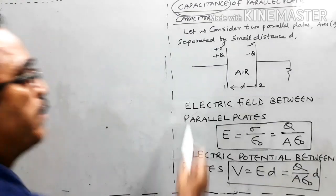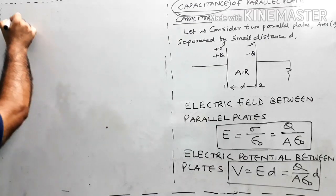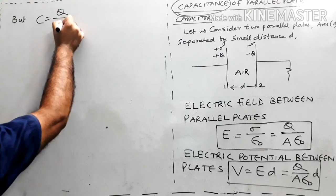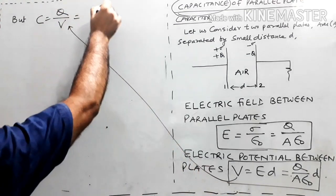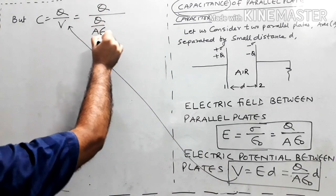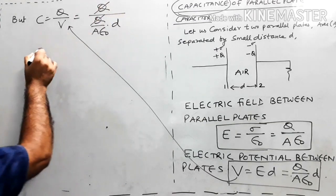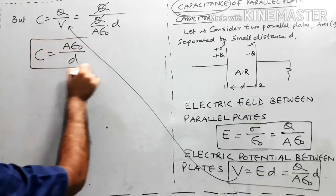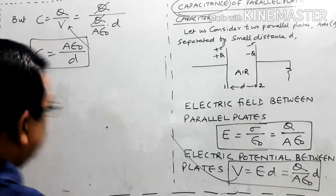We are studying capacitance of a parallel plate capacitor. Now, C = Q/V. Substituting the value of V, C = Q ÷ (QD/Aε₀). Q cancels out, giving C = Aε₀/D.